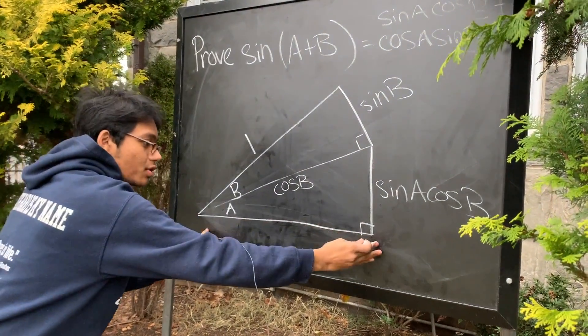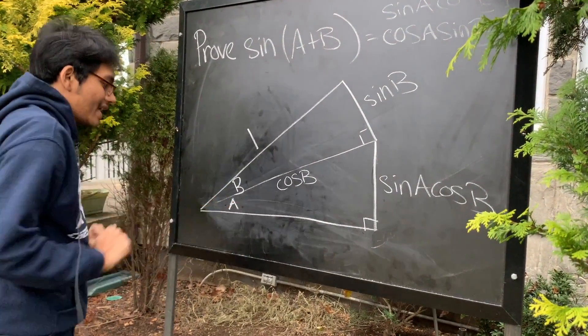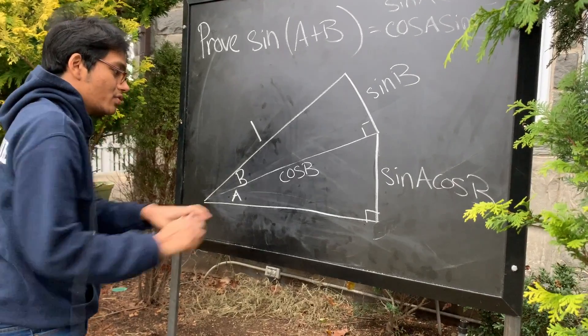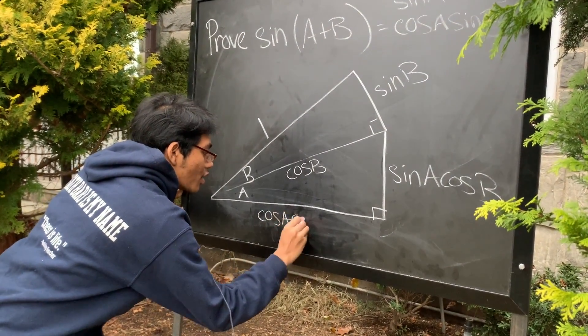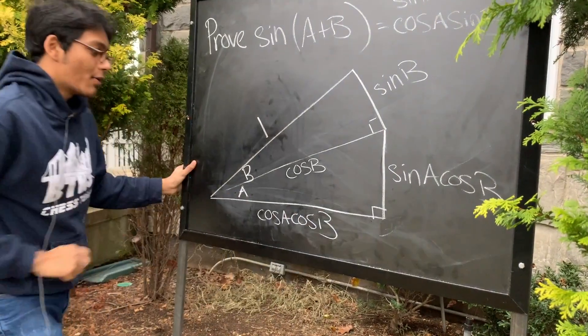Okay, and now we can conclude what this leg has to be. If this is angle A, this hypotenuse is cosine of B, this must be cosine of A, cosine of B.